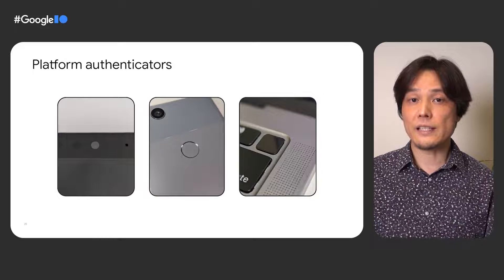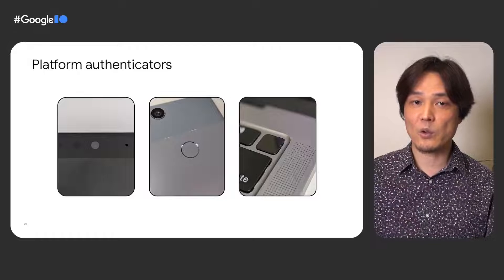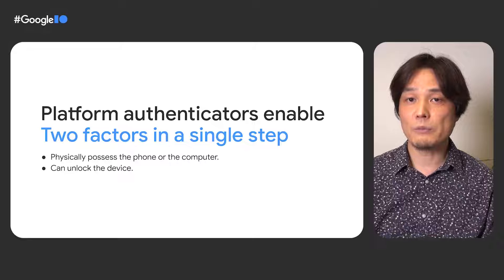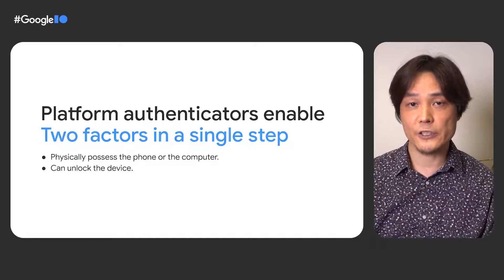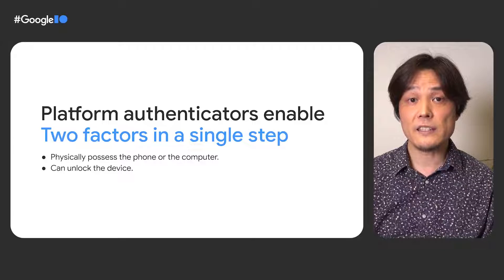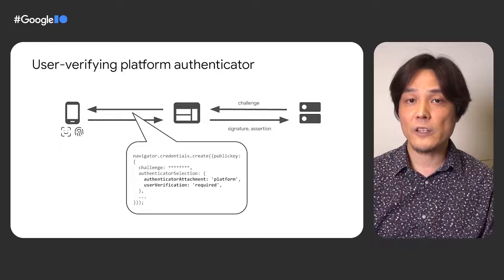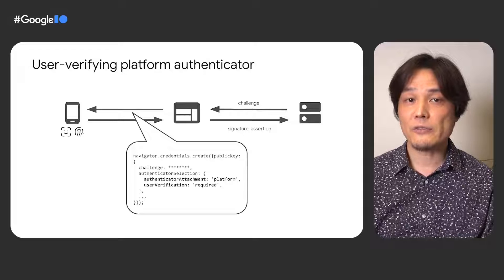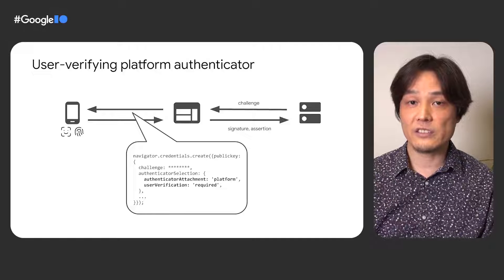Platform authenticators usually integrate with a biometric sensor such as a fingerprint sensor or a camera with facial recognition. The ceremony performed on platform authenticators involves unlocking the device, which can involve a biometric sensor. Platform authenticators provide two factors in a single step: the user needs to physically possess the phone or the computer, and they need to take an action to unlock it. To use a platform authenticator with WebAuthn, specify the authenticator attachment as platform and user verification as required on registration. The rest of the code for authentication is identical to the previous example.